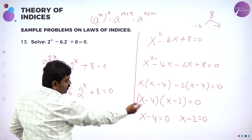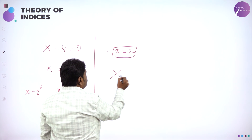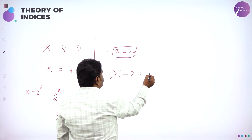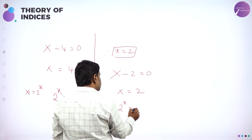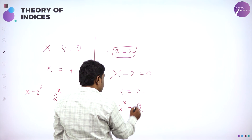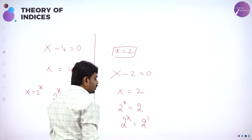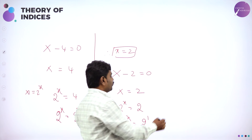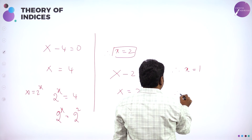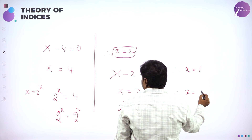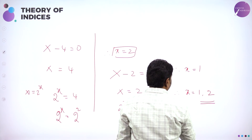Other root: X minus 2 equals 0, so X equals 2. X means 2^x, so 2^x = 2 = 2^1. Again bases are same, so x equals 1. Therefore x values are 1 and 2.